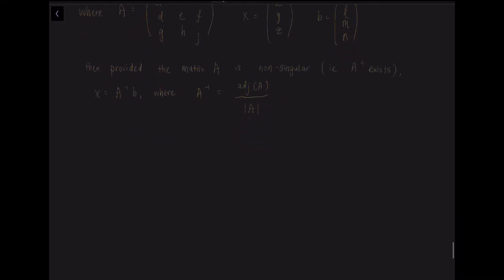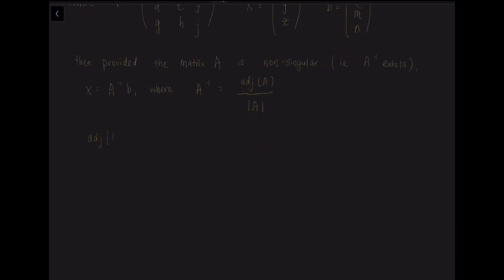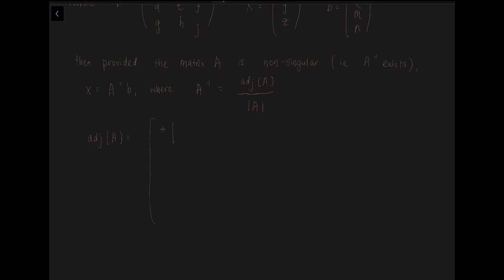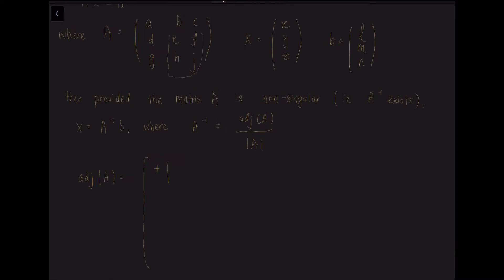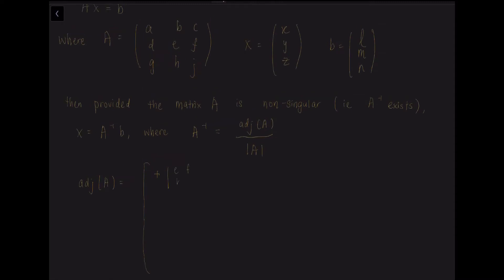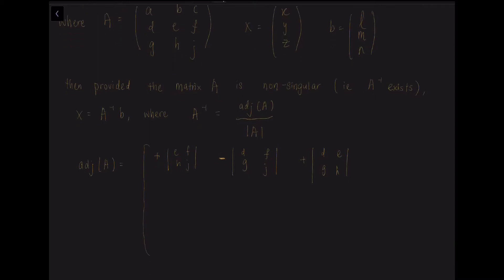So how do we find A⁻¹? A⁻¹ equals the adjoint of A over the determinant of A. The adjoint A can be written in a complicated form, but it is quite straightforward if we look carefully. We have each cofactor of matrix A inside, starting with a plus sign, done the same way we find determinants. For the first cofactor, we look at A and we have E, F, H, J as our components, and so on. We also need to remember that the sign is important.